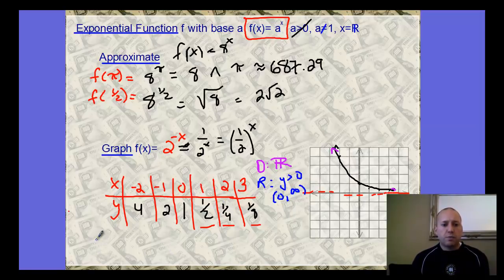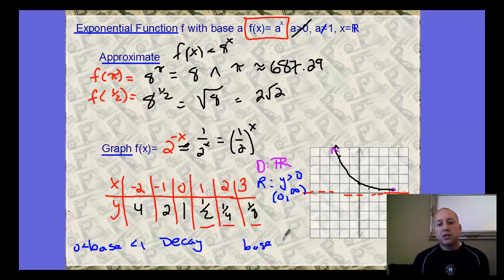To recall from basic math here, our base value: if your base is between 0 and 1, it's decay. That's what's happening here. And if our base is greater than 1, it's going to be growth. We usually talk about the absolute value. The negative doesn't be different, which is the transformations, which we'll talk about in a second.